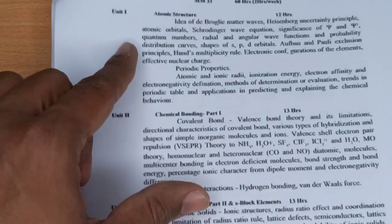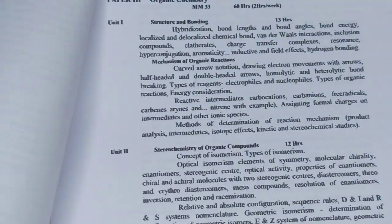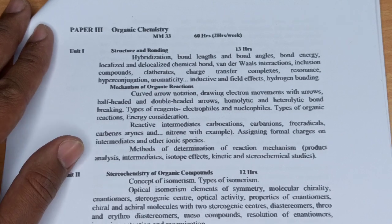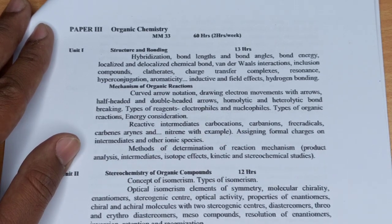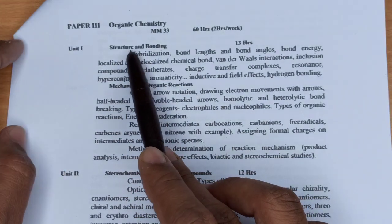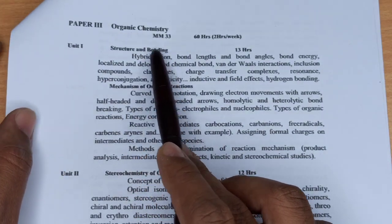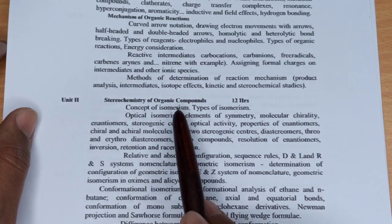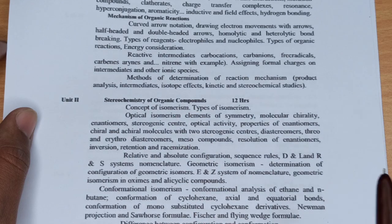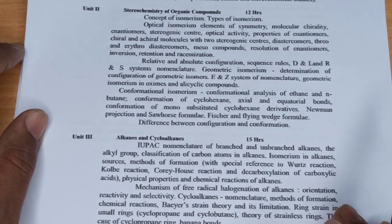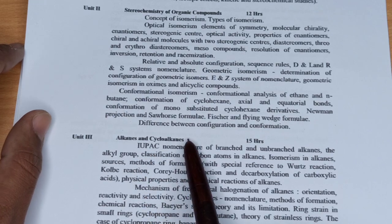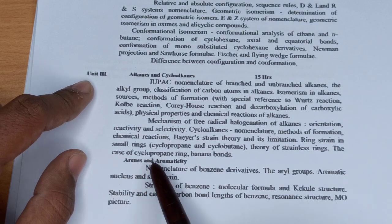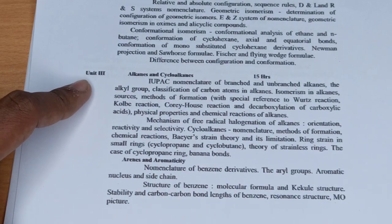अब Organic Chemistry की बात करते हैं। Unit 1 में Structure and Bonding है। Unit 2 में Stereo Chemistry of Organic Compounds है। Unit 3 में Alkenes and Cyclo-Alkenes के बारे में पढ़ेंगे, साथ ही Arenes and Aromaticity भी है।